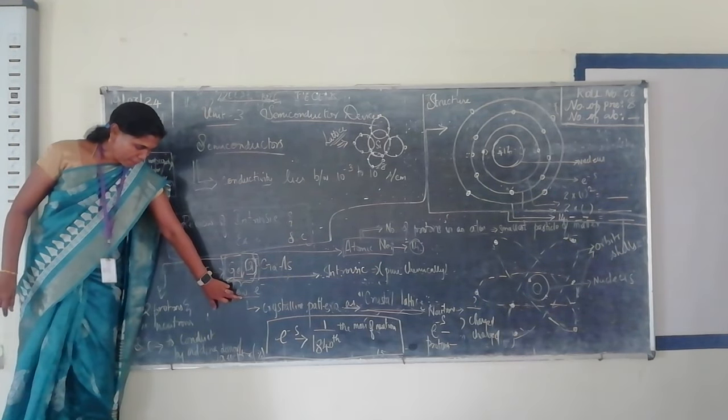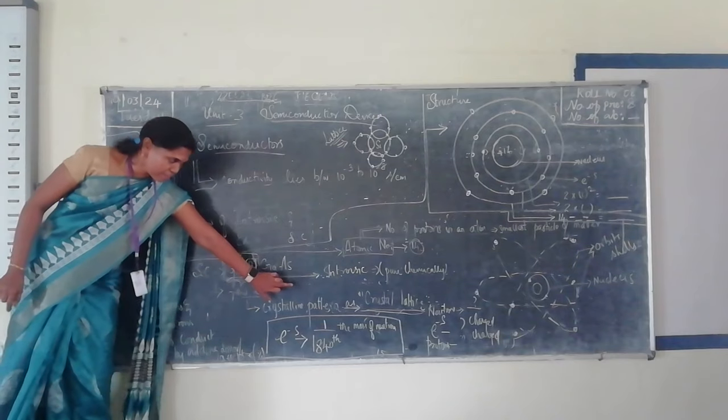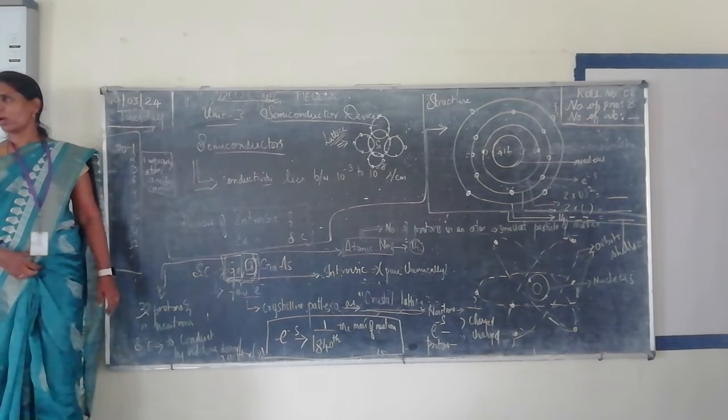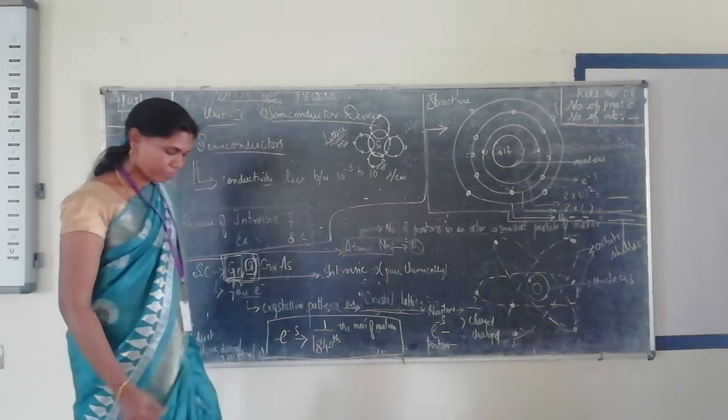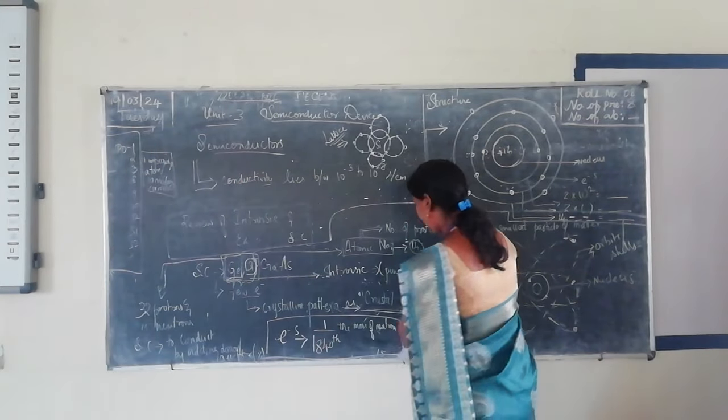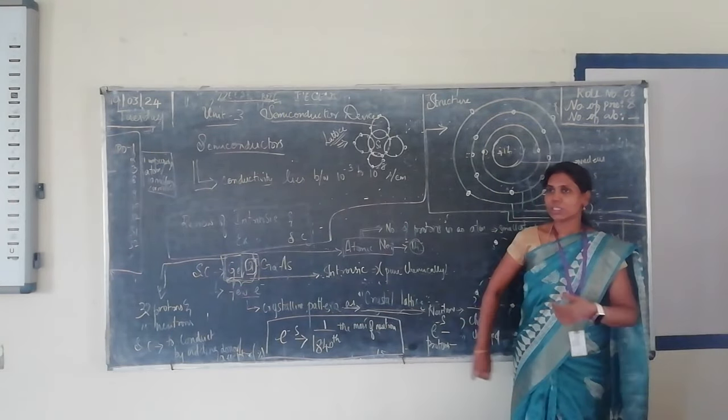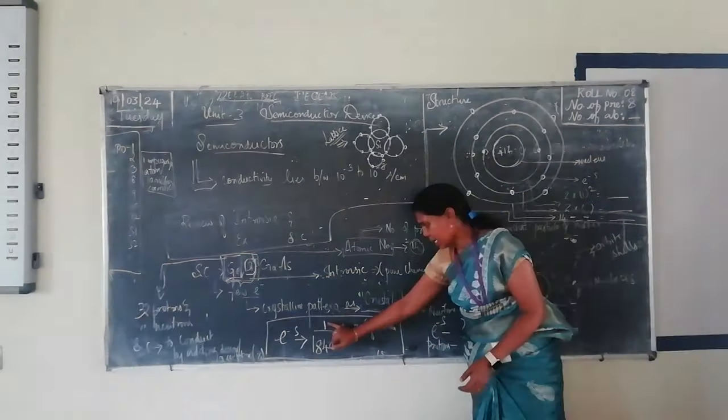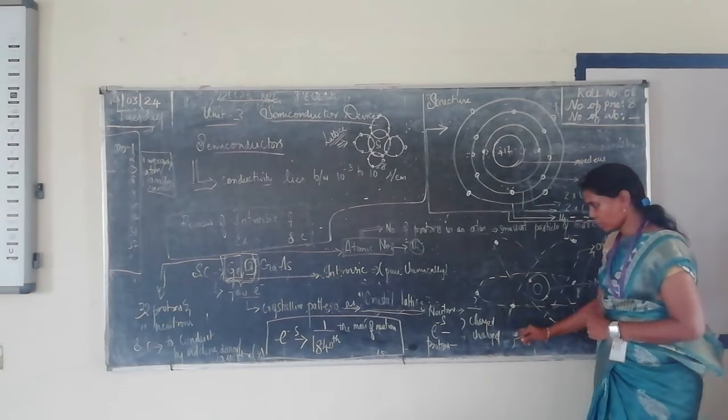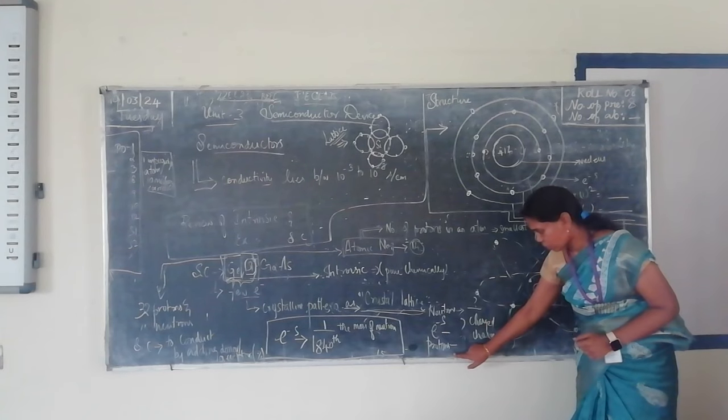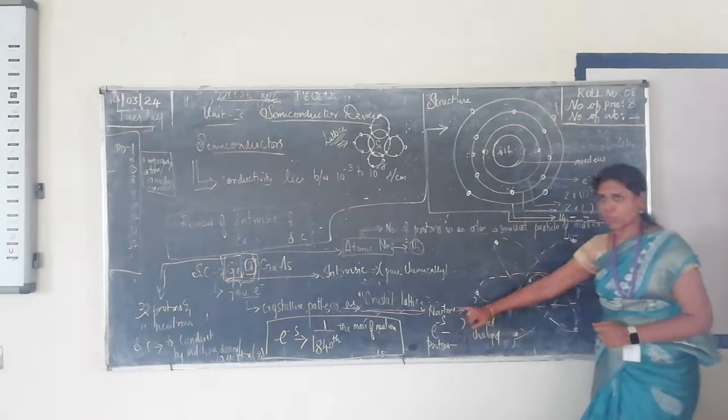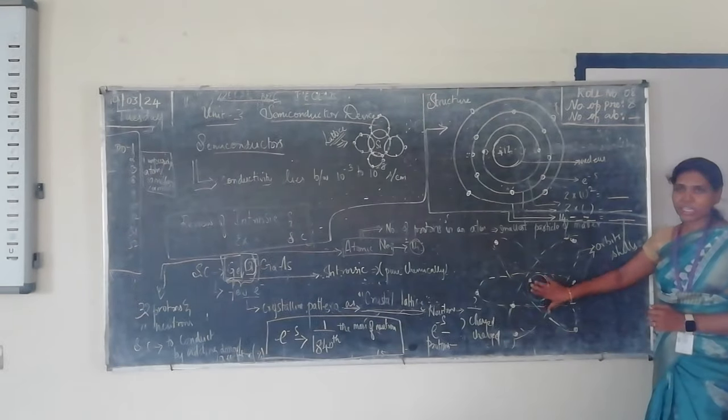What happens is we will be having a crystalline appearance or crystalline structure or crystalline pattern, what is called a crystal lattice. We have the electrons, protons, and neutrons.